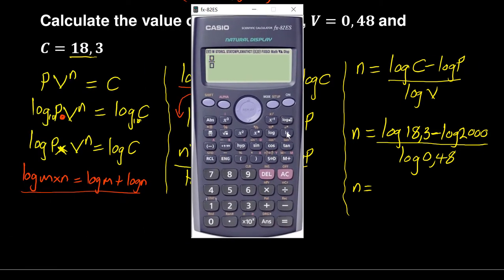I can simplify finally by using my calculator. As I said already, I'm not going to use the log base because the base is 10, so I'll simply use the log. So it will be log 18.3, don't forget to close the bracket, minus log 2000, again don't forget to close the bracket, divided by log 0.48 and you close the bracket, and the answer is 6.3953.